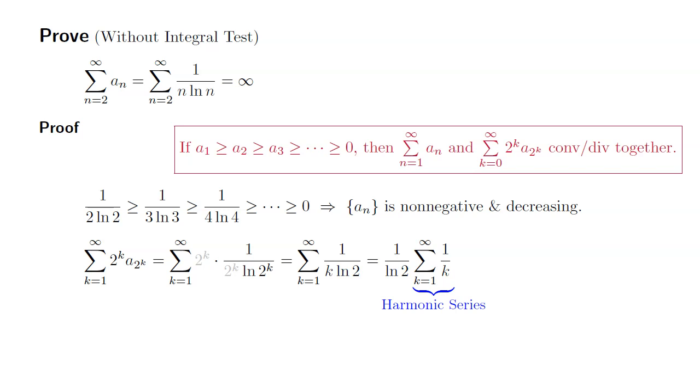So therefore, infinity times 1 over natural log of 2 is still infinity. So it's going to diverge to infinity. So therefore, the original series, which is summation n goes from 2 to infinity of 1 over n times natural log of n also diverges to infinity.